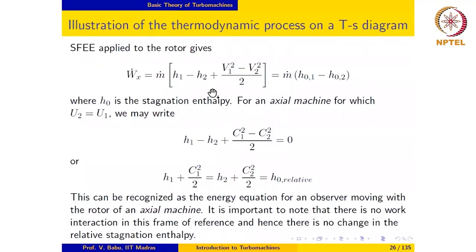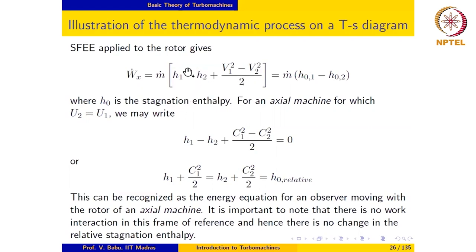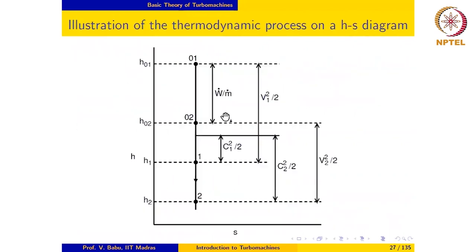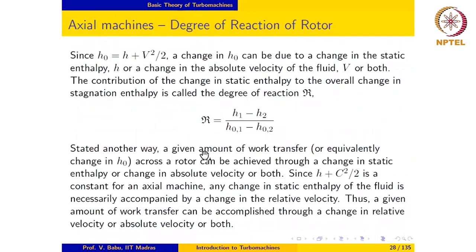The key takeaways from the previous lecture are as follows. It is possible to effect a certain transfer of work to the rotor of a turbo machine by means of the change in specific enthalpy of the fluid in the rotor passage, or by means of a change in specific kinetic energy of the fluid in the rotor passage, or both. The fractional contribution of the change in specific enthalpy to the total specific work transfer is defined as the degree of reaction.